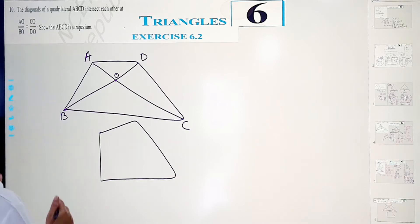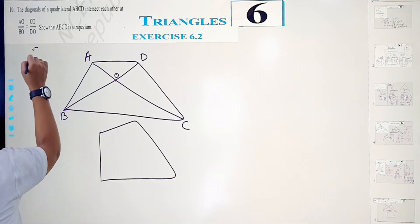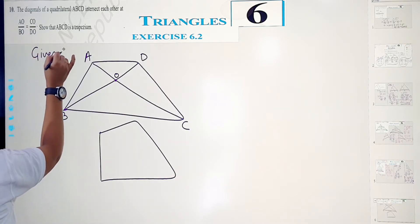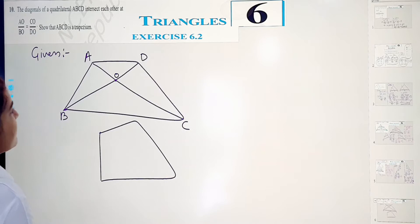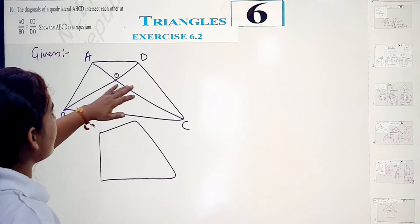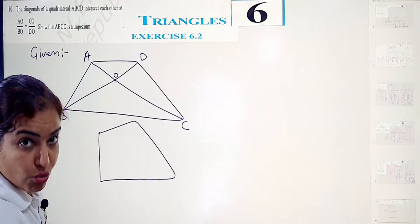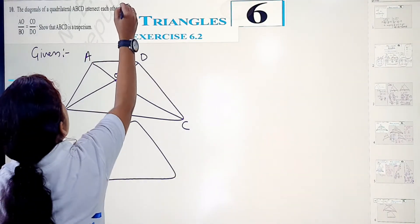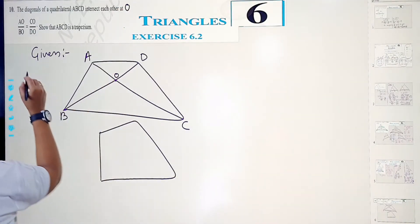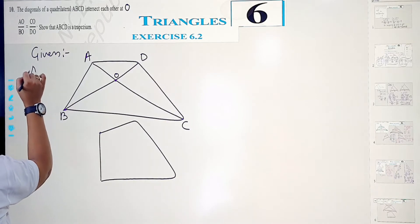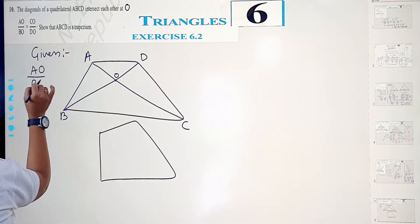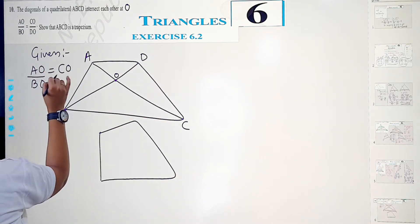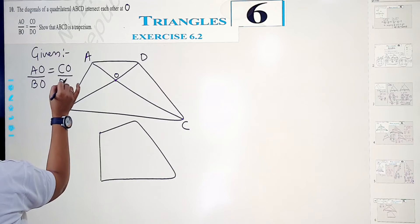Now what is given? Quadrilateral ABCD with diagonals intersecting at point O, and also you have AO/BO = CO/DO.